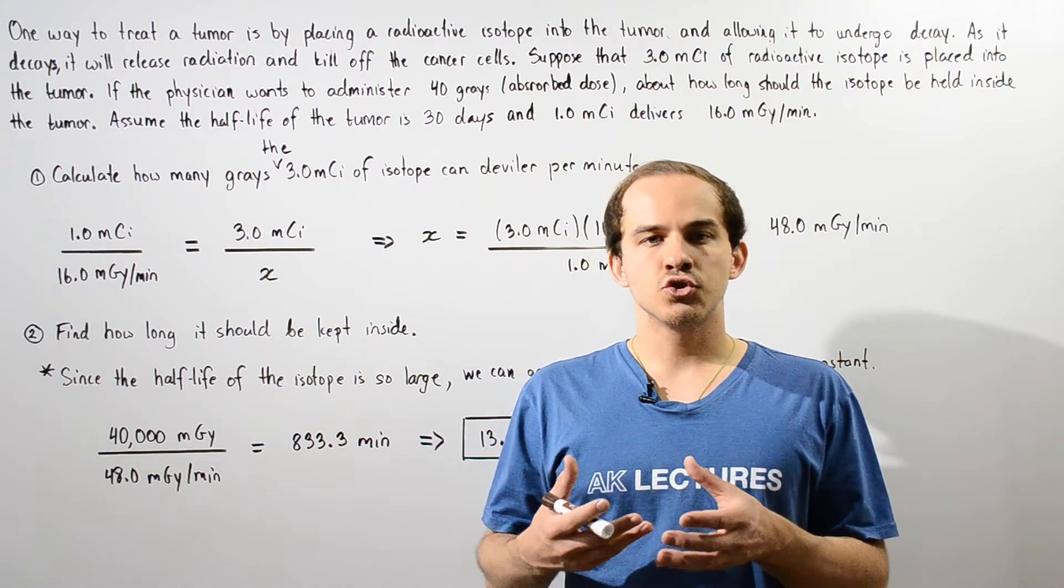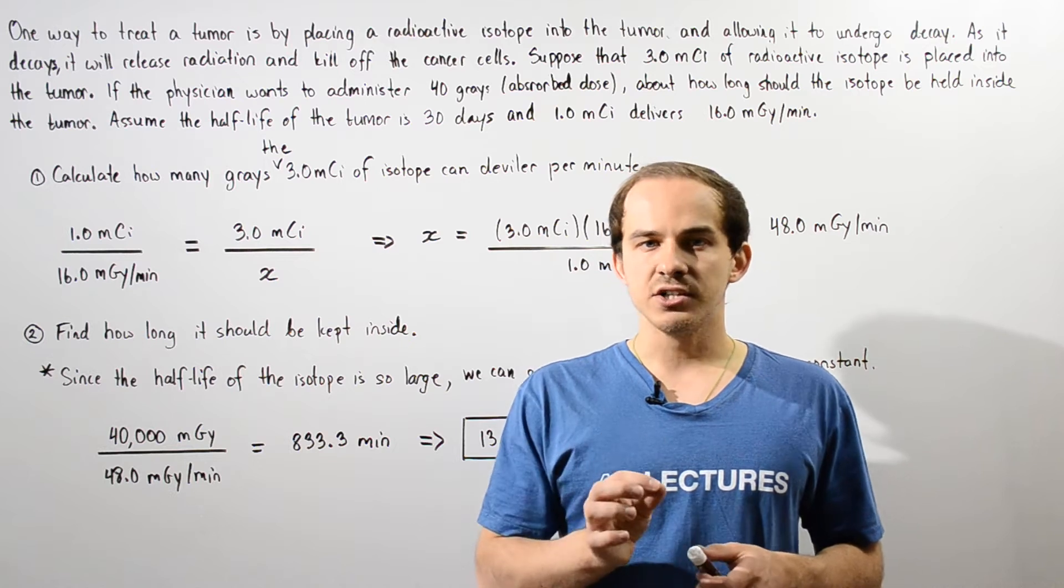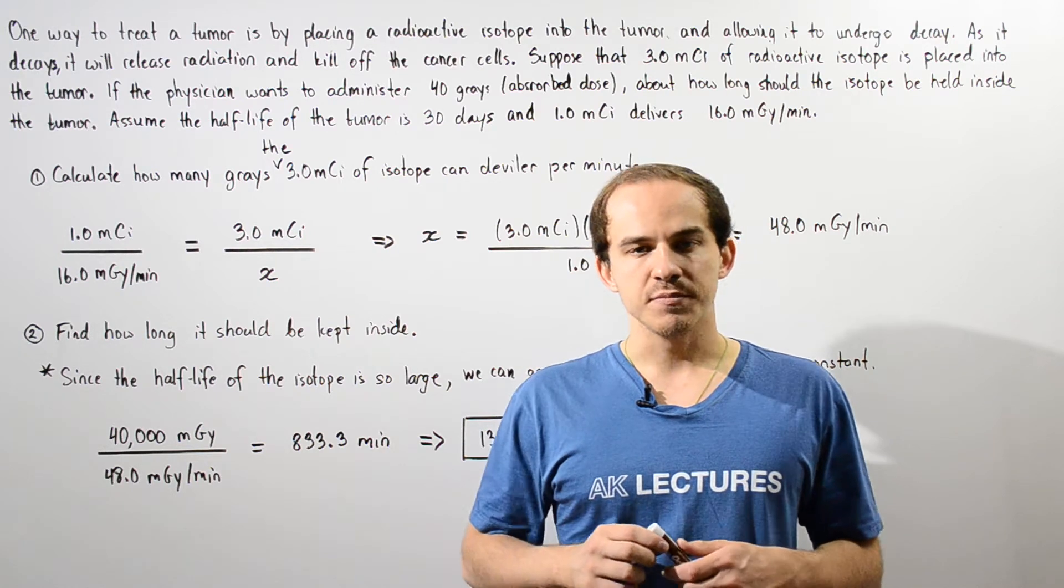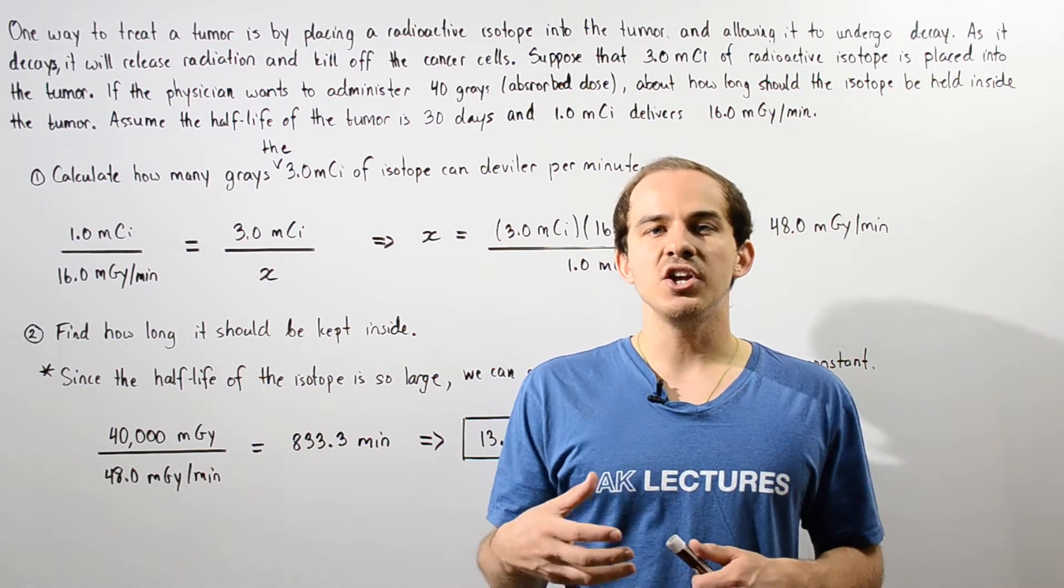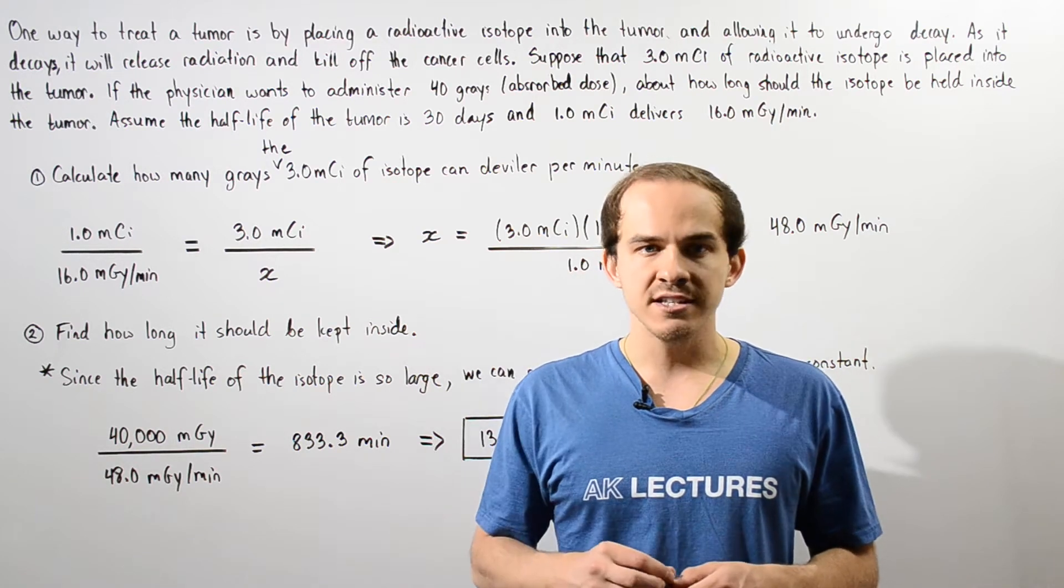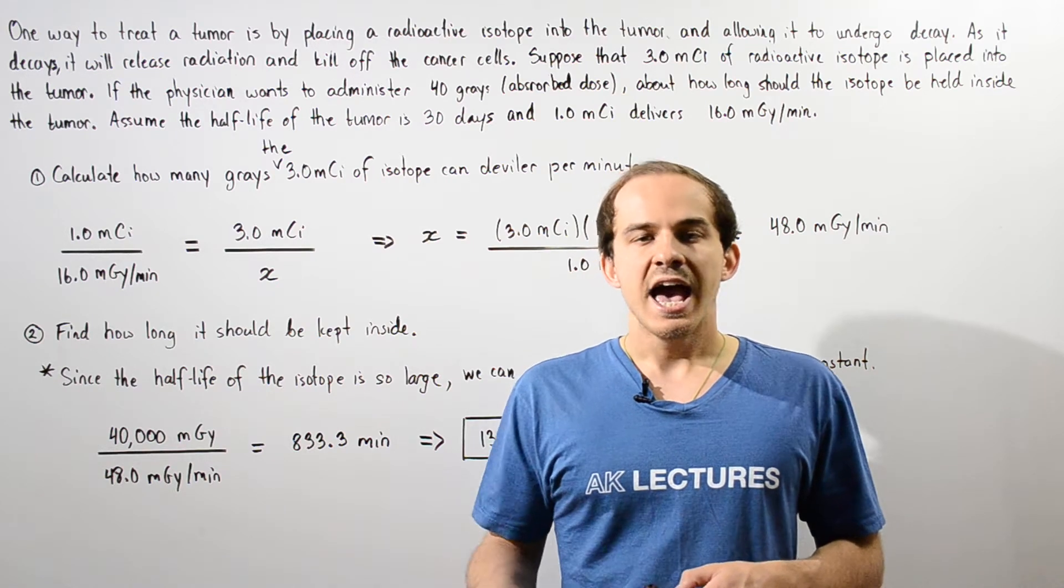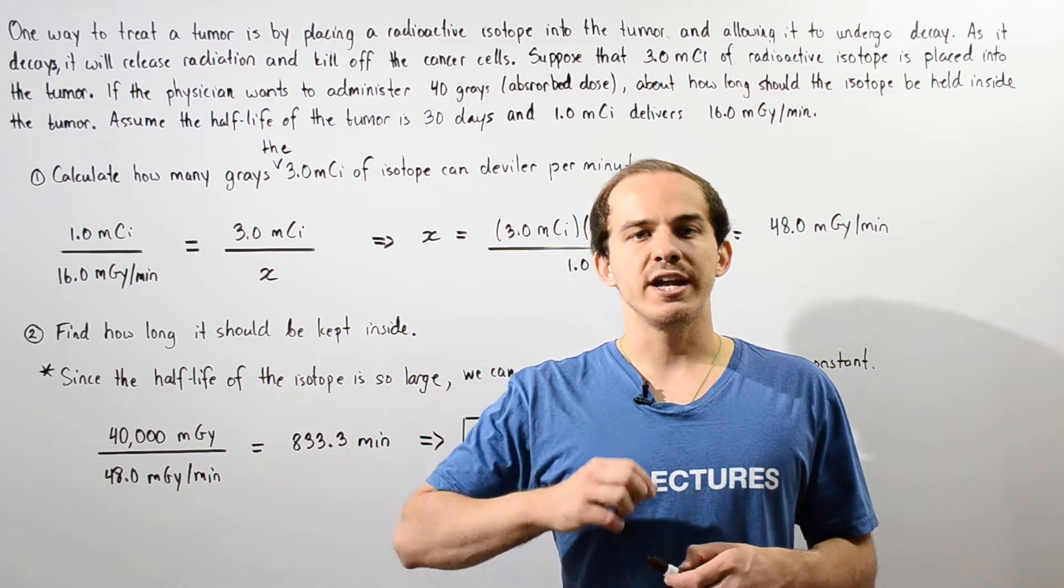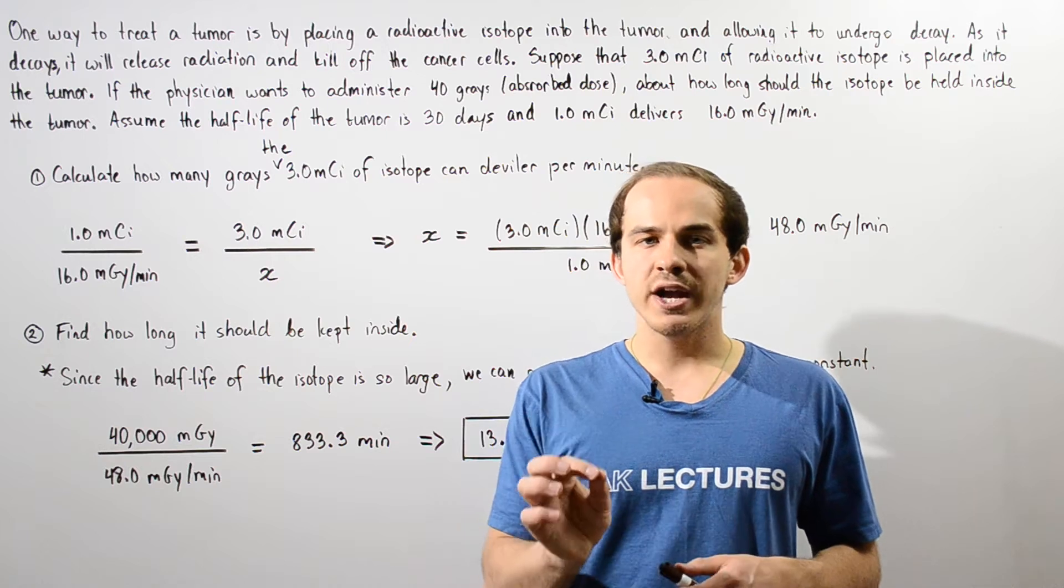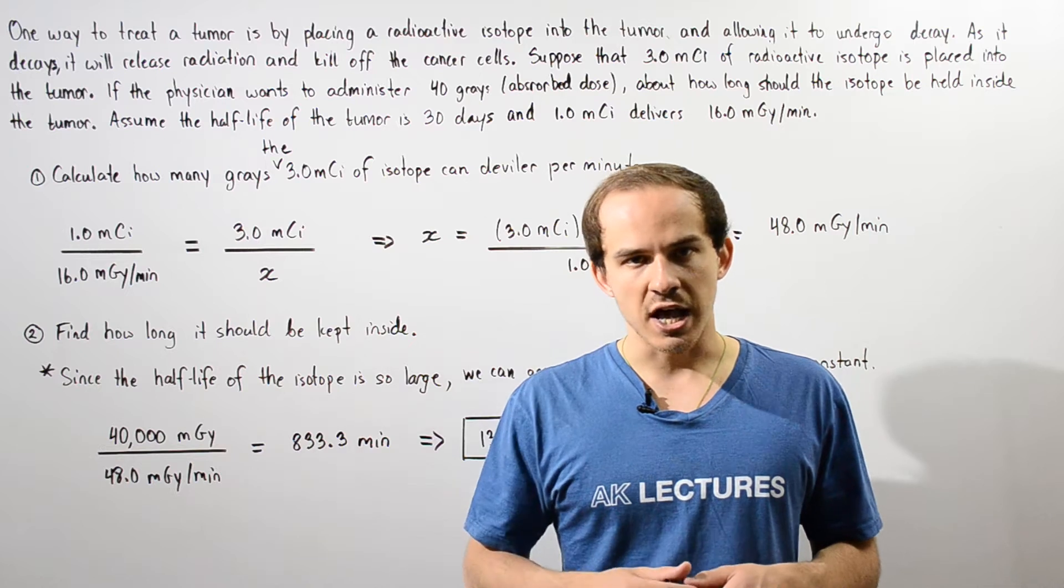One way that we can treat tumors is by placing a radioactive isotope inside that tumor. When we place the radioactive isotope inside the tumor, the radioactive isotope will undergo radioactive decay, and that will release radiation. When the radiation travels through the tumor, it will kill off the cancer cells.